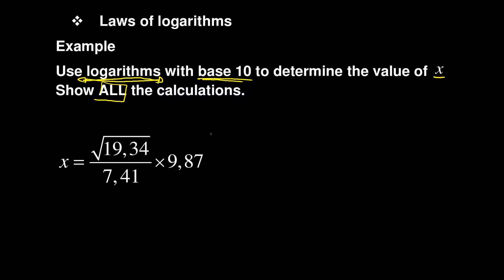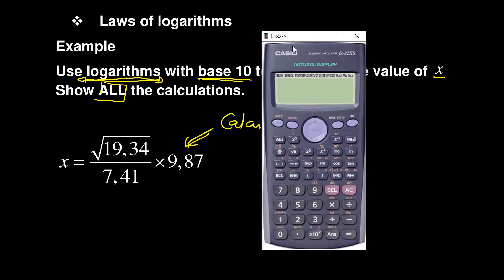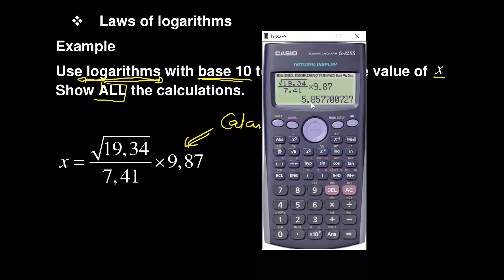My strategy for this kind of problem is to first take my calculator and find the answer directly. I'm using the calculator just to find the target answer, then I'll work toward it. The expression is the square root of 19.34 over 7.41, times 9.87. When I enter that into the calculator, the answer is 5.8577.